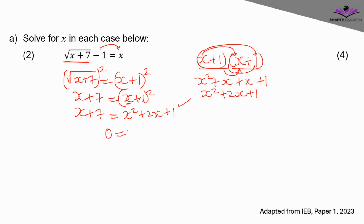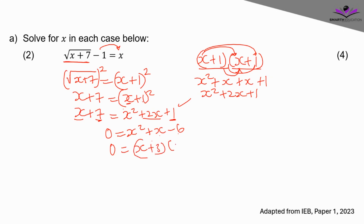Now let's get standard form. Transposing x + 7 to the right-hand side gives 0 = x² + 2x − x + 1 − 7, which simplifies to 0 = x² + x − 6. Factorizing, we need factors of −6 that sum to +1, which are +3 and −2. So we get (x + 3)(x − 2) = 0.